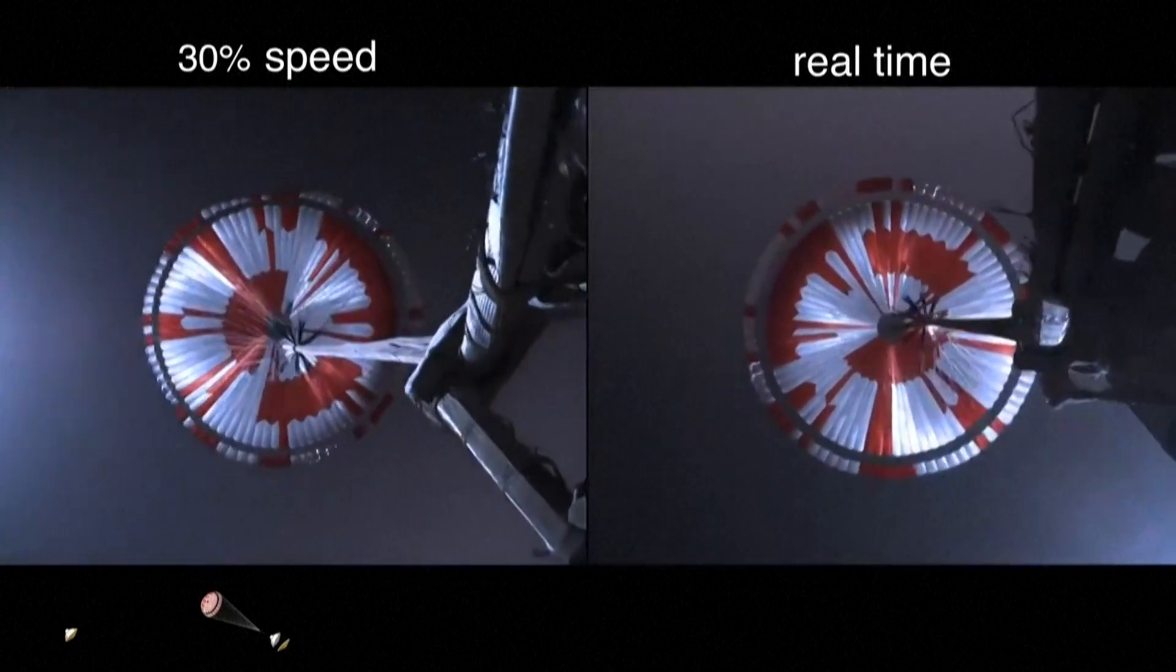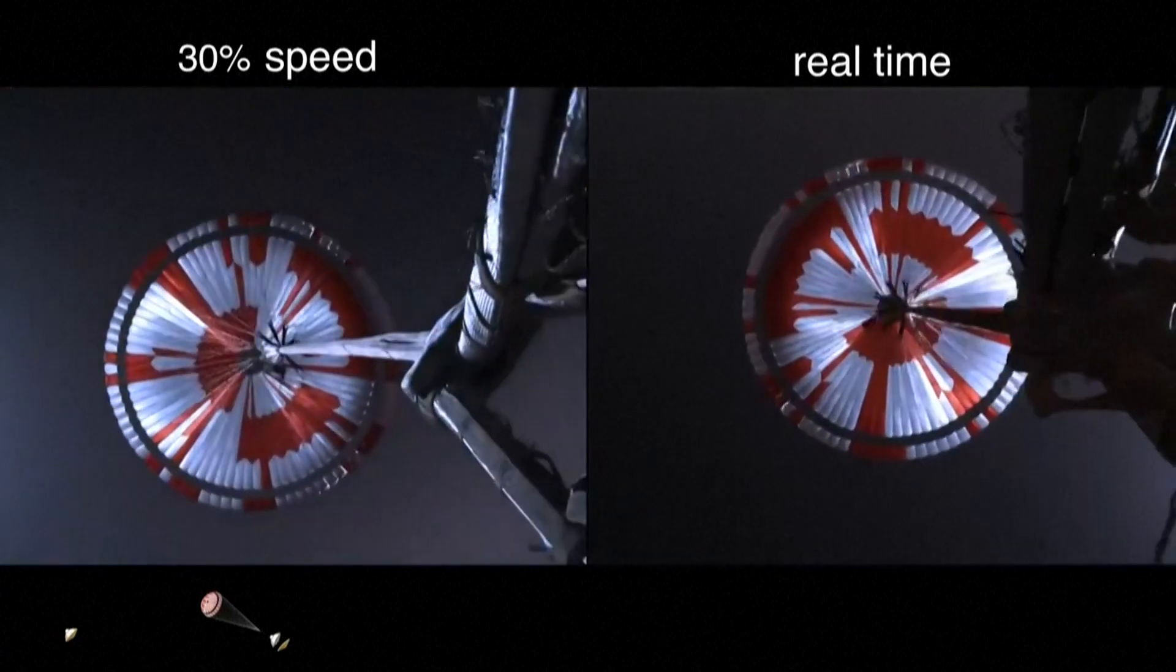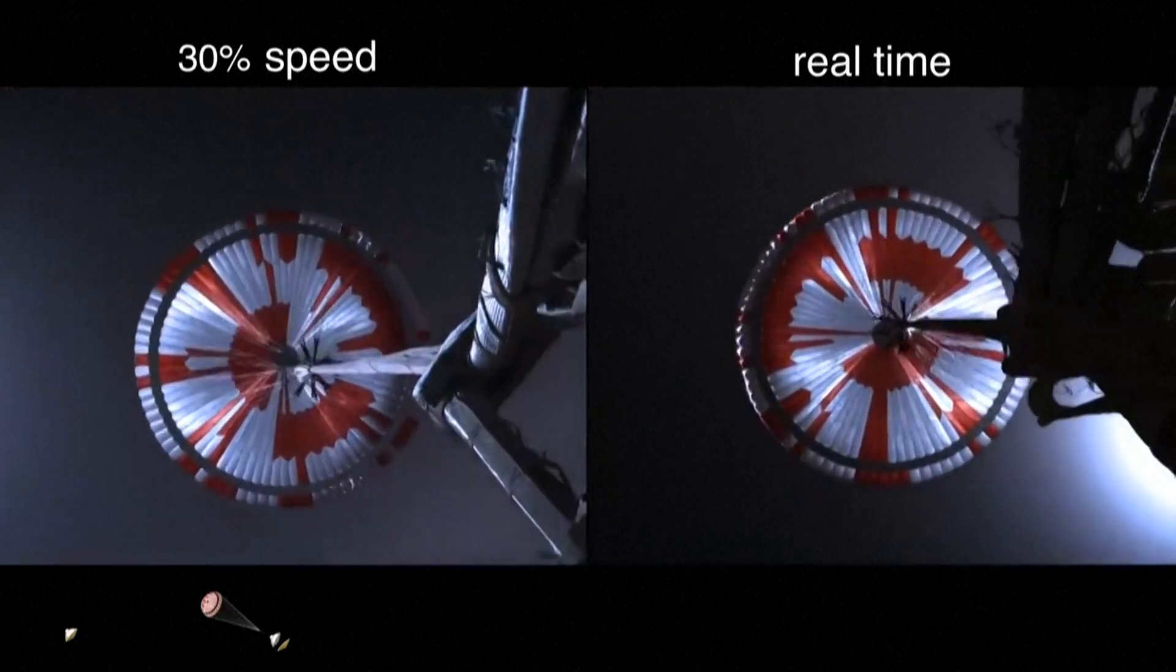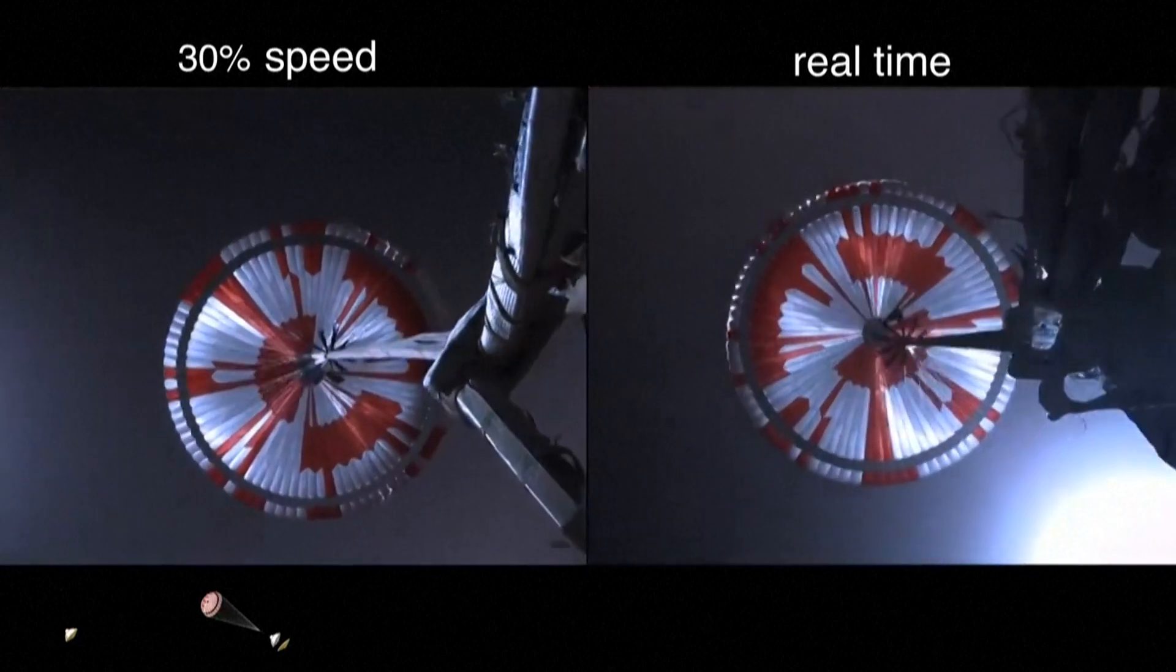Navigation has confirmed that the parachute has deployed and we are seeing significant deceleration in the velocity. Our current velocity is 440 meters per second at an altitude of about 12 kilometers from the surface of Mars.